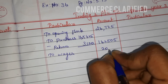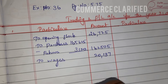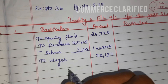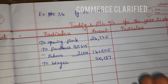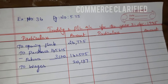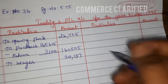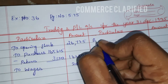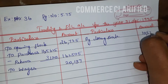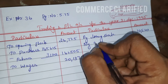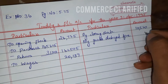Wages are 20,137. If you have outstanding wages you add the adjustment — adjustments appear on two sides of the final accounts, either in the trading account or P&L account and the balance sheet. Closing stock is 10,520. Goods destroyed by fire, 1,000, is also included in the trading account.